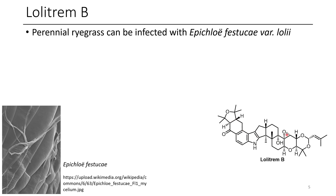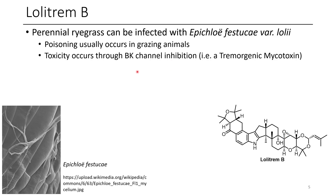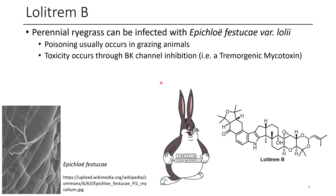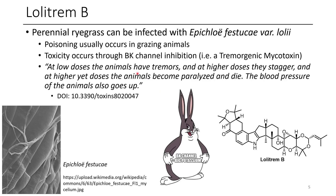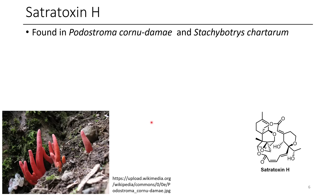Normally the poisoning that occurs is in grazing animals, and the toxicity occurs through BK channel inhibition — BK stands for 'big potassium,' which is a pretty funny name. At low doses, animals that consume this have tremors; at higher doses they stagger; at even higher doses they become paralyzed and die. Additionally, blood pressure goes up.